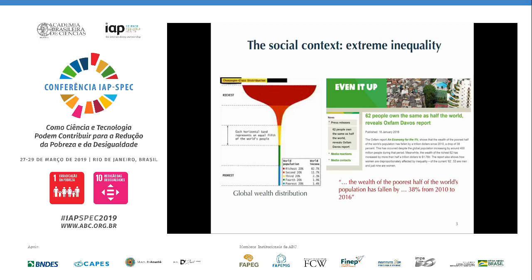On the right-hand side, there is an extract from an Oxfam report from 2016 indicating that the wealth of the poorest half of the world's population had fallen by 38% over the period 2010 to 2016.